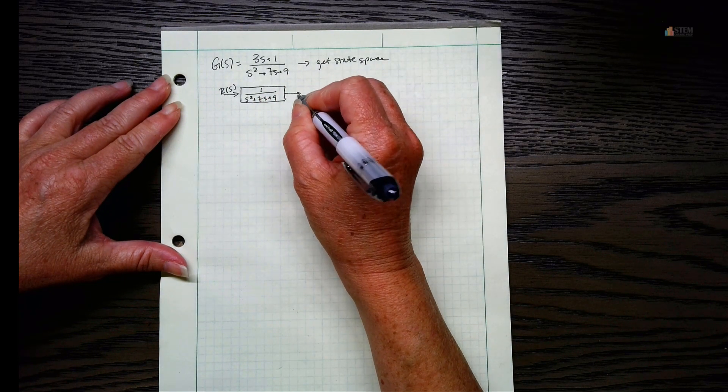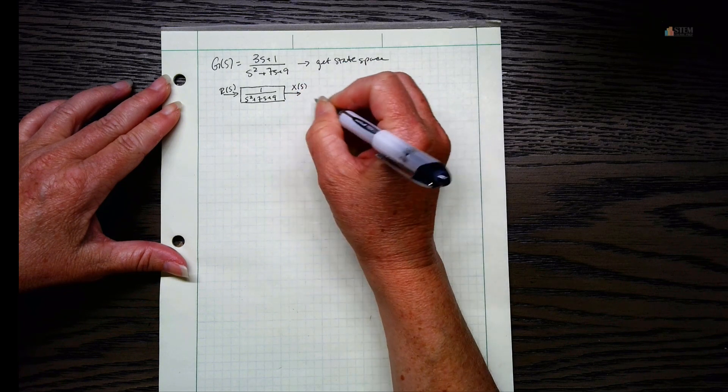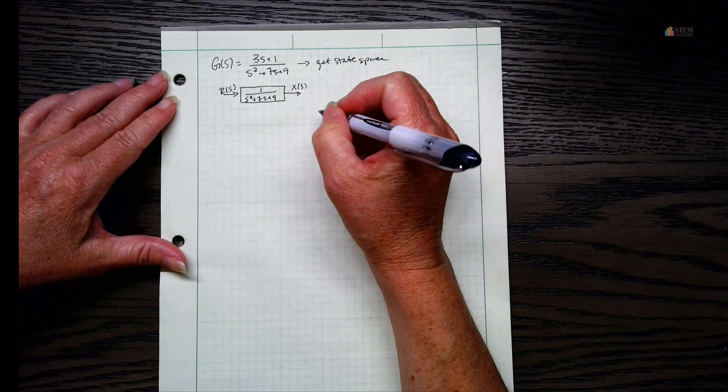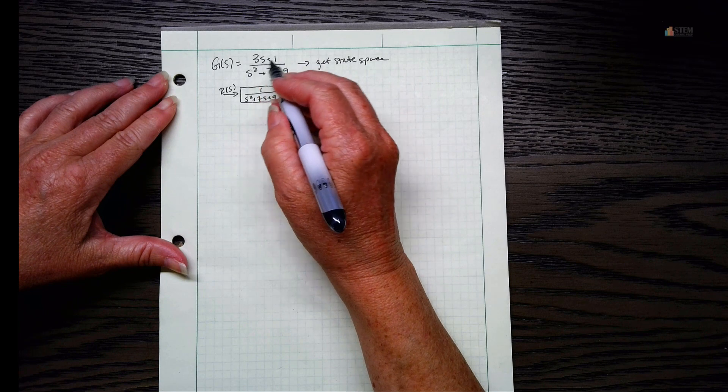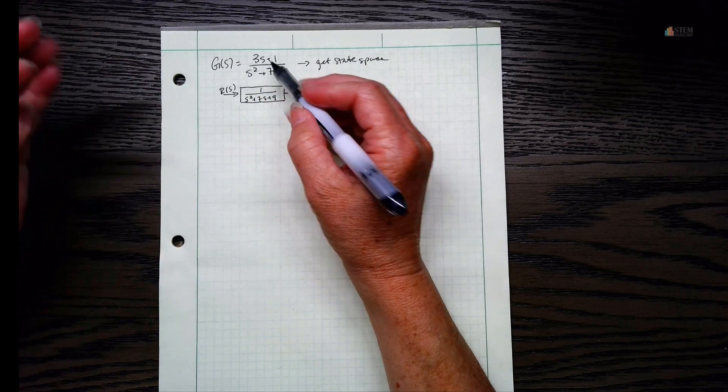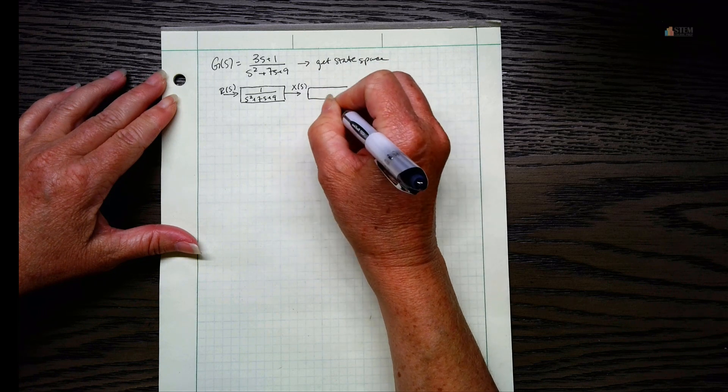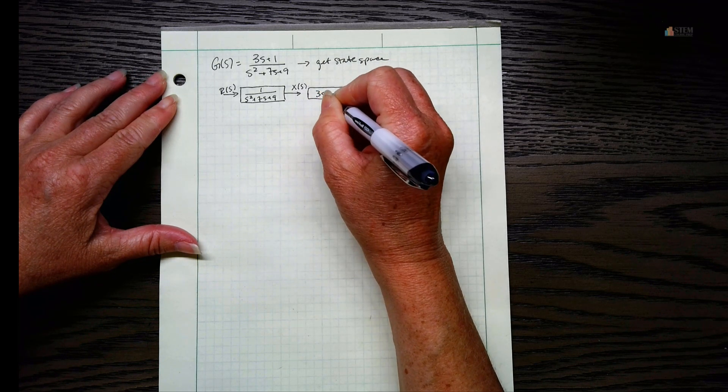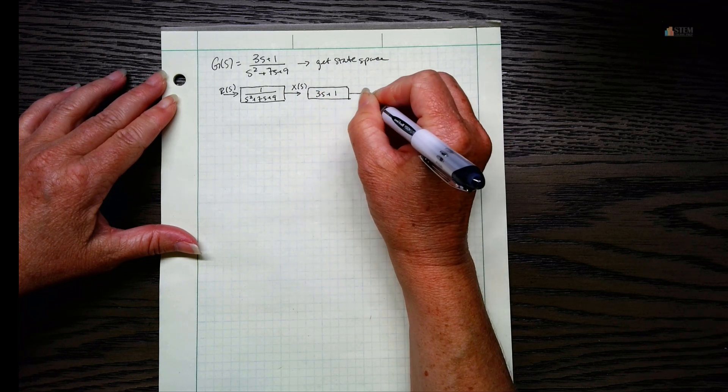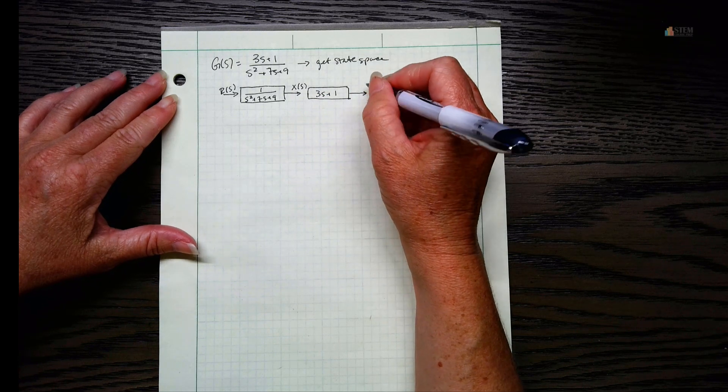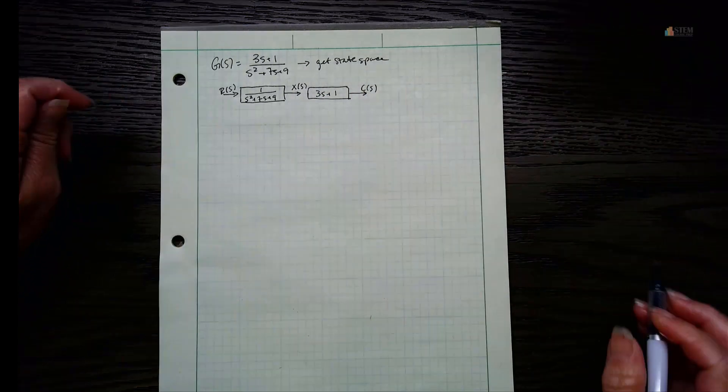Coming out of here, let's call it X of S - you can call it whatever variable you want. And then now we've got to take into account this numerator because we've got this 3S plus one up here. So let's take that and put that in a block right here, and then let's have this output be called C of S.